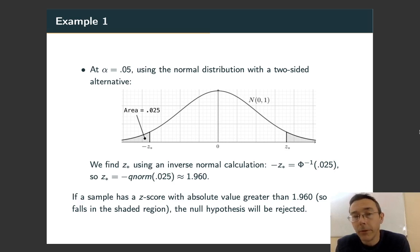So if you go out and get a sample to use in your significance test, and that sample comes back with a z-score with absolute value greater than 1.960, that tells you to reject your null hypothesis.